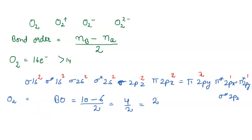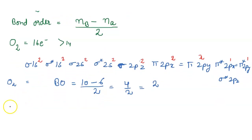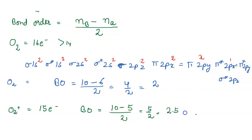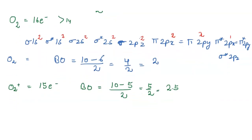Next, O2 positive. Positive means 1 electron is lost, so O2 positive has 15 electrons. The bonding electrons remain 10. The anti-bonding electrons become 5 because 1 electron is removed. So bond order equals 10 minus 5 divided by 2, which equals 5 upon 2, which equals 2.5.